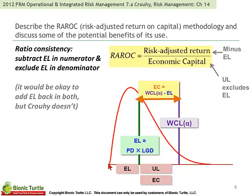Taking this distribution and identifying the economic capital: in general, it corresponds to the unexpected loss. Imagine this distribution represents credit losses that could occur. Starting from the left over to some point — which may be a mean — we have the expected losses. In credit terms and in terms of the operational portfolio, expected losses are a cost of doing business, covered by provisions or reflected in the yield and handled in the income statement. Expected losses in credit are probability of default times loss given default. The virtue of RAROC is that it can be applied across risk buckets — we can take the same concept, extend it across risk buckets, and then aggregate it.